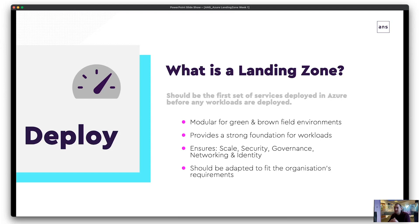Identity is a real core element, but there are others. A landing zone should be modular — you should be able to cherry pick the areas you want and need. It should be usable for greenfield environments and overlaid back onto brownfield environments as well. The cloud is forever changing; early adopters may have deployed with best practice at the time without keeping up as guidance evolved, and you should ensure you're still in accordance with your landing zone.